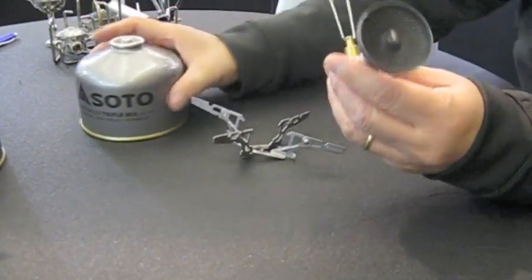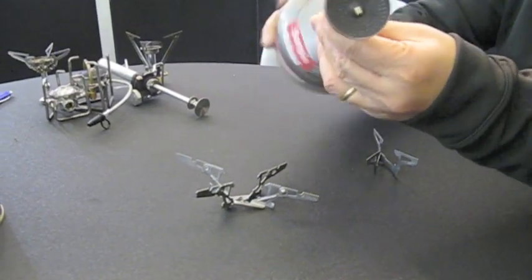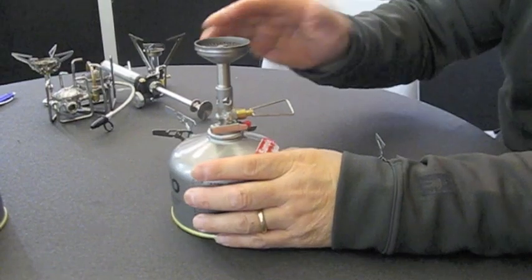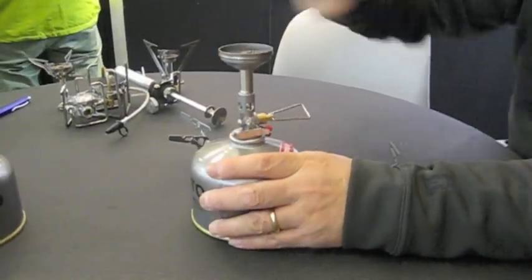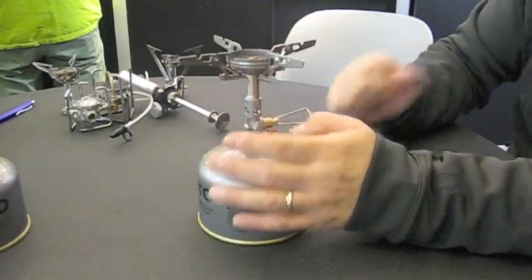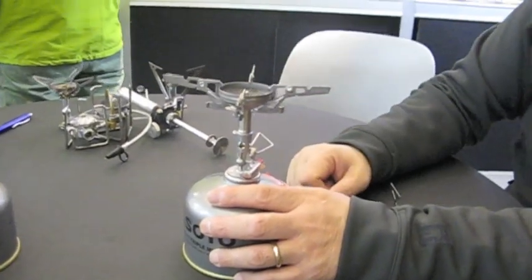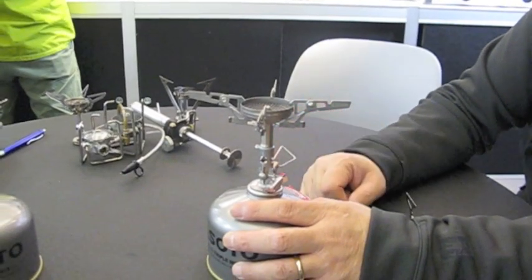Now, with this stove, we call this windmaster because the way that we design burner head. As you can see, the burner head is concave and we have a lip around about it. So when you place this windscreen, well, actually a pot support, it acts almost like a windscreen. And it's very strong under the windy condition. It performs very well.